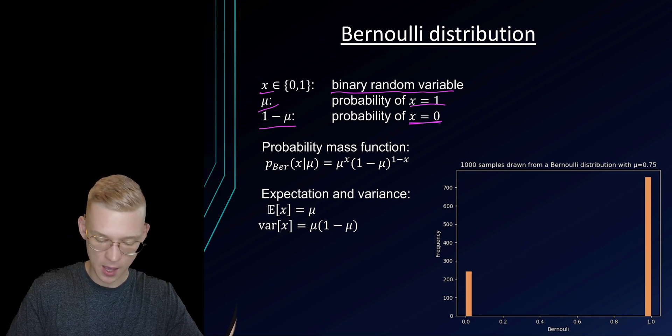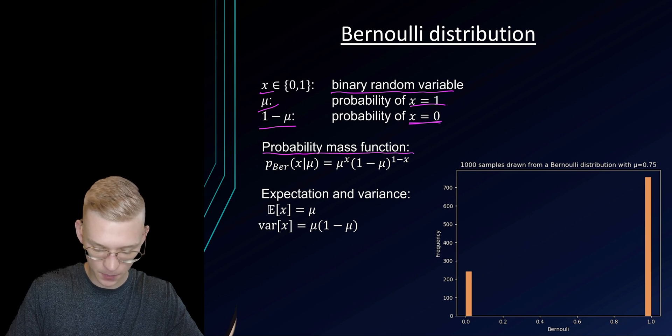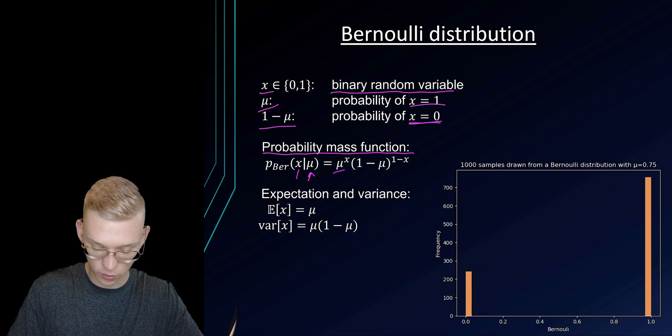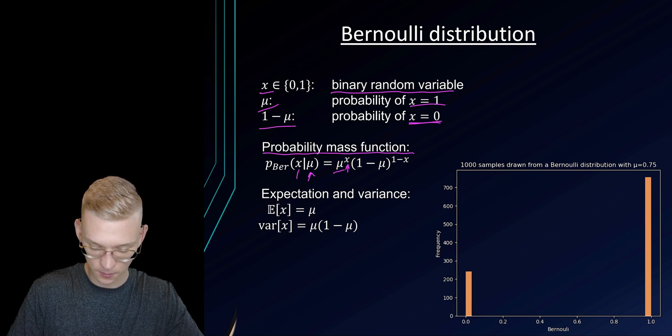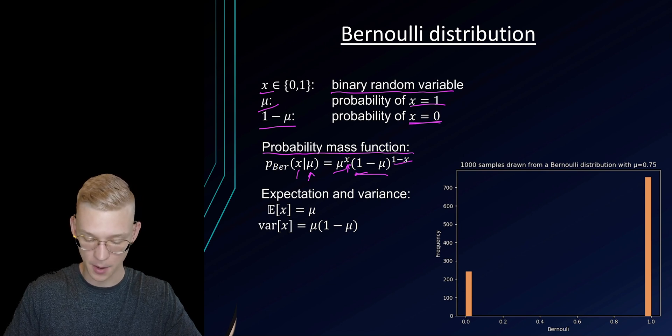So we can say that we have a probability mass function where the probability of x given mu is mu to the power of x times 1 minus mu to the power of 1 minus x.